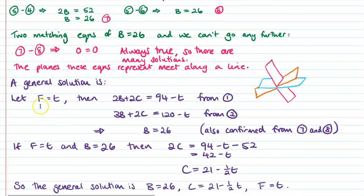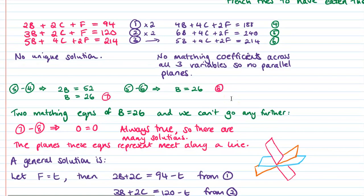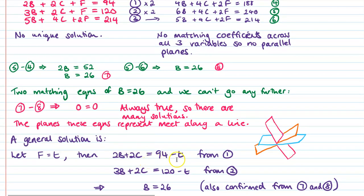So for our general solution, we let F be equal to T. And like you've seen in previous videos, we could have chosen any of those variables to be equal to T and then carry on from there. Then using F is T in these equations up here, then we get, so this is from equation number one, we get that 2B plus 2C is equal to 94 minus T. And then from equation number two, we've got 3B plus 2C is equal to 120 minus T, which brings us down to B equals 26, which actually we saw earlier.